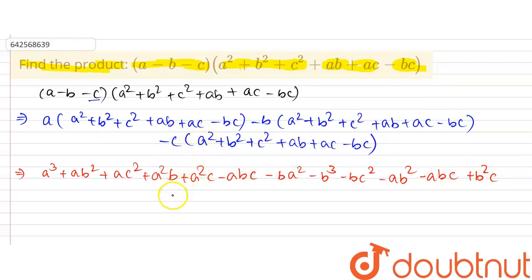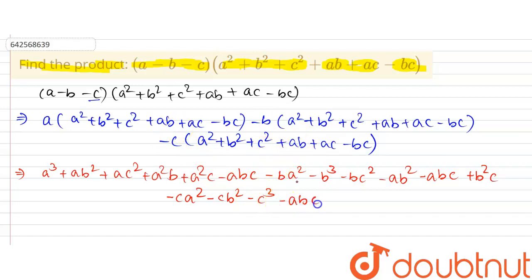Now multiplying minus c with the expression: minus c into a square equals minus ca square, minus c into b square equals minus cb square, minus c into c square equals minus c cube, minus c into ab equals minus abc, minus c into ac equals minus ac square, and minus c into minus bc equals plus bc square.